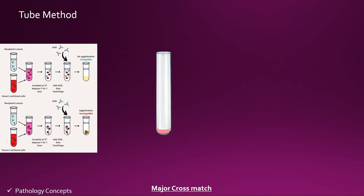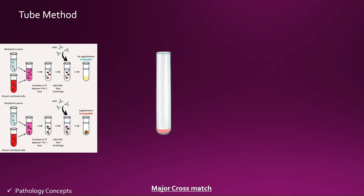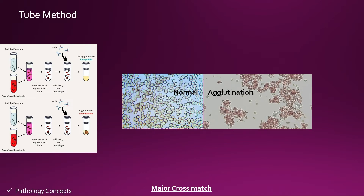But if you don't find agglutination, we can say that IgM antibody is absent, but we still have to perform the AHG phase. After washing, add two drops of AHG into the tube, incubate five minutes at room temperature, centrifuge for one minute at 1500 RPM, and check for agglutination under the microscope. If agglutination is absent, the cross match is compatible and the blood product can be transfused to the recipient. But if agglutination is found, the cross match is incompatible and blood product cannot be transfused.